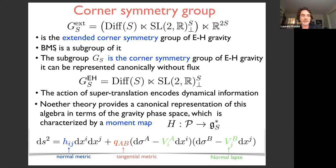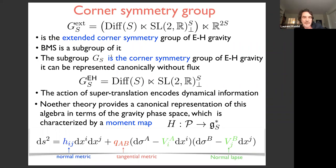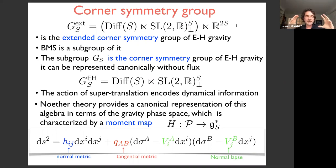BMS is simply a subgroup of this corner symmetry group that preserves the null direction: in BMS, the null direction reduces SL(2,R) to just GL(1) and reduces the translations to lie along the null. The corner symmetry group supersedes all other asymptotic symmetry groups like BMS. There's a subgroup containing super-translations that encodes dynamics of the theory. For classifying states at a given moment in time, we focus on the corner symmetry group: Diff(S) semi-direct product with functions valued into SL(2,R).